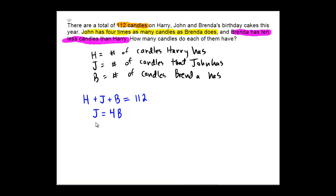Finally, in purple: Brenda has ten less candles than Harry. So Brenda's number of candles is equal to ten less than the number that Harry has, giving us b equals h minus ten. That gives us three equations we can work with to solve for the three unknowns: h, j, and b.